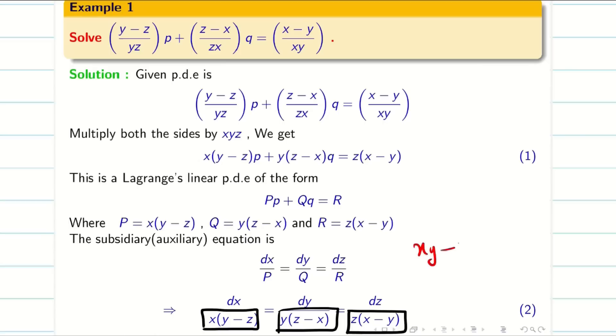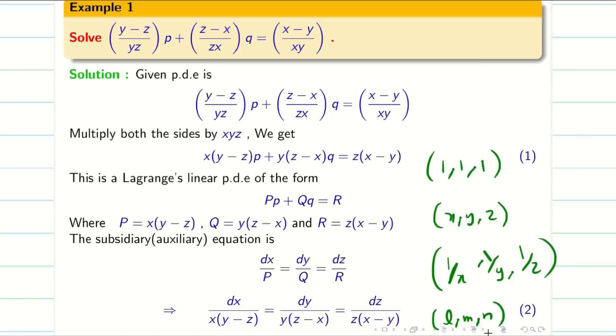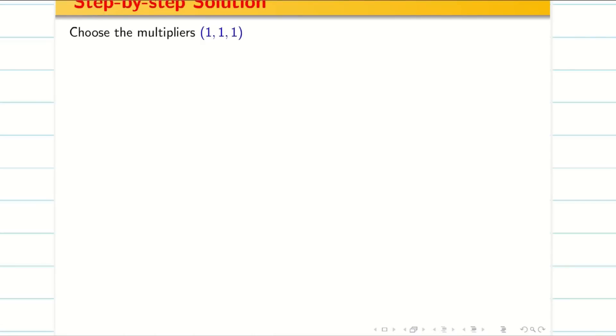Simplifying gives xy - xz, yz - xy, zx - zy. If you add these denominators: xy and xy cancel, yz and yz cancel, xz and xz cancel. Simply adding the denominators without doing anything, I am getting zero. The multipliers can be 1,1,1. Just adding the denominator and numerator, I'll get zero.